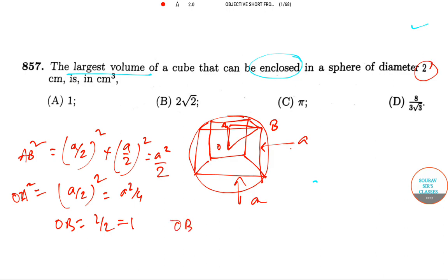So now, OB square equal to A square plus AB square putting the values we will get that A equal to 2 by root 3.